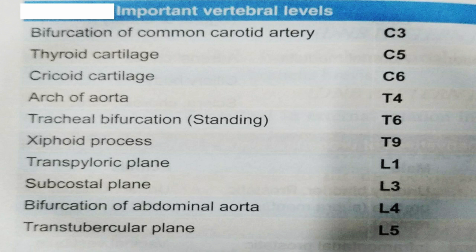Subcostal plane is at the level of L3. Bifurcation of the abdominal aorta is L4, lumbar vertebra number 4. Then the trans tubercular plane is at the level of L5, lumbar vertebra number 5.